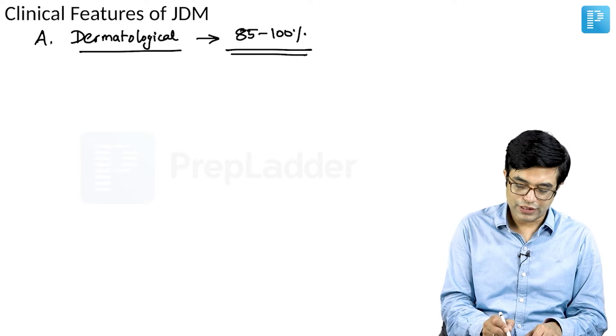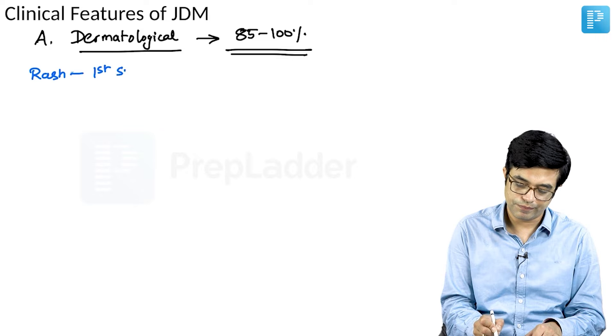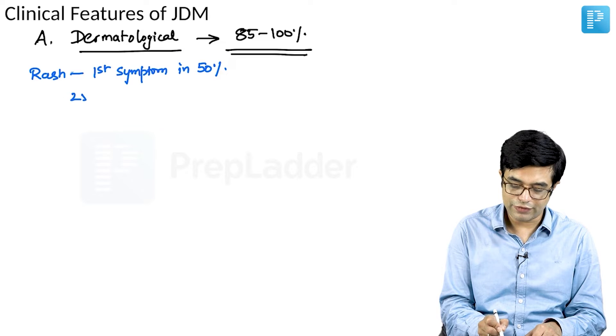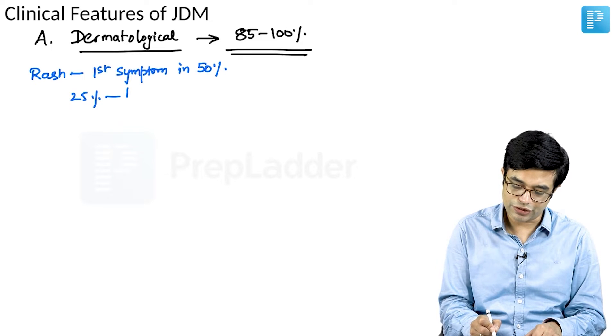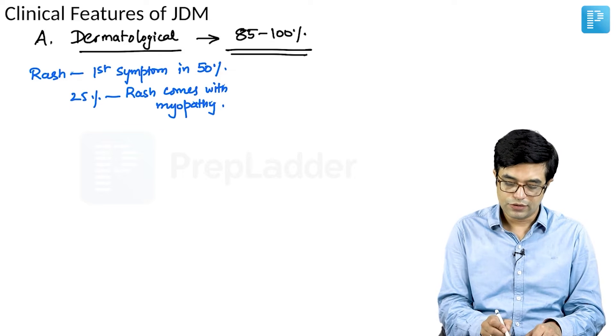The onset of dermatological manifestations, rash is the first symptom in 50 percent cases and in another 25 percent cases, rash comes along with the myositis or myopathic features.